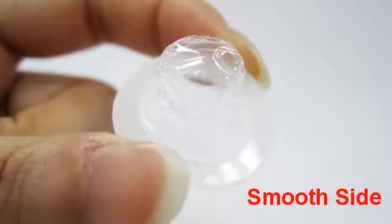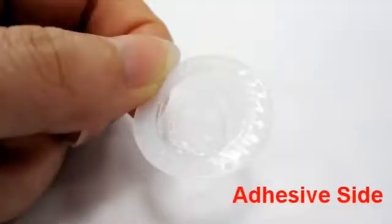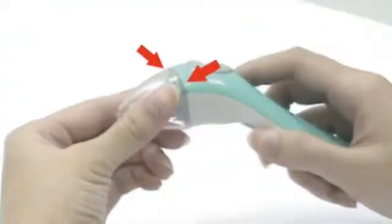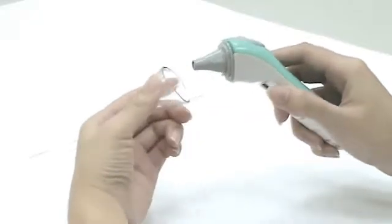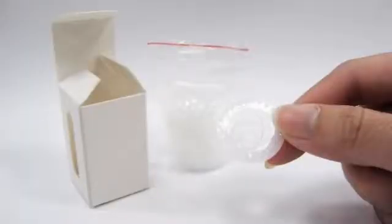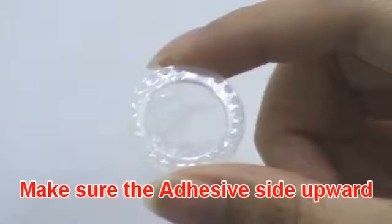The probe cover has a smooth side and an adhesive side. Gently squeeze the opposite ends of the thermometer to pull off the probe cap. Use a new and undamaged probe cover. Make sure the adhesive side is upward.